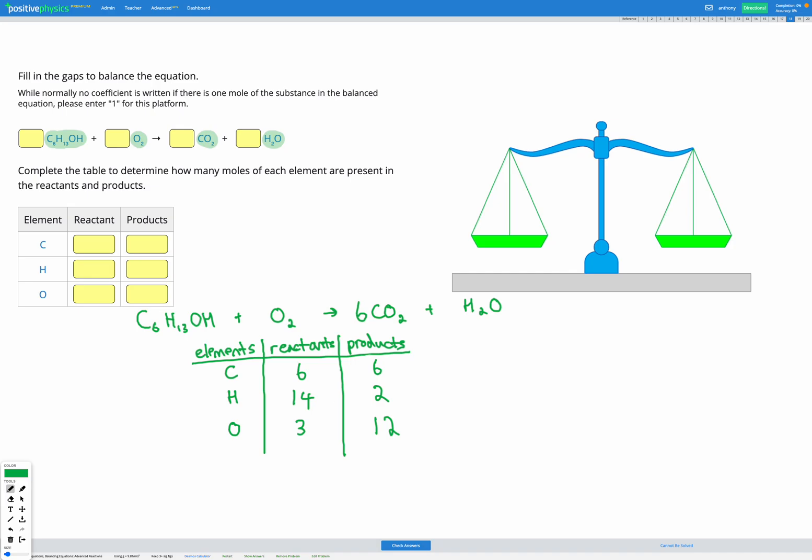I'm going to have a go balancing the H here. Right now we have 14 on the left and only two on the right, and our H is in an H2O molecule. So if I wanted to have 14 on the right, which is my goal so I can balance, that would mean having 7 H2O.